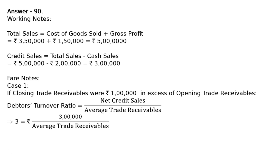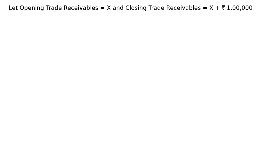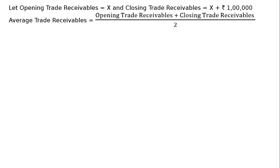3 = rupees 3 lakhs divided by average trade receivables, which implies average trade receivables = rupees 1 lakh. Let opening trade receivables = x, then closing trade receivables = x + rupees 1 lakh (since closing is rupees 1 lakh in excess of opening). Average trade receivables = (opening + closing) divided by 2 = rupees 1 lakh.